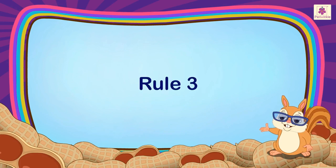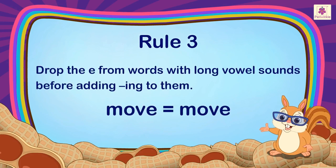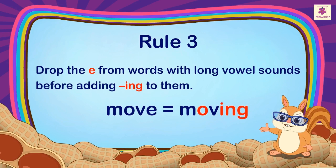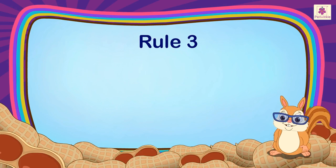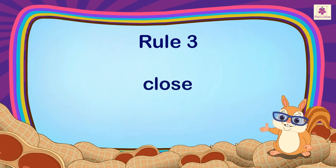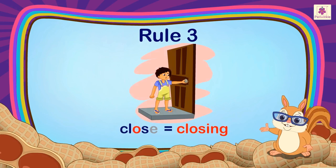Rule 3: Drop the E from words with long vowel sounds before adding ING to them. For example: Shaking. Close becomes Closing.